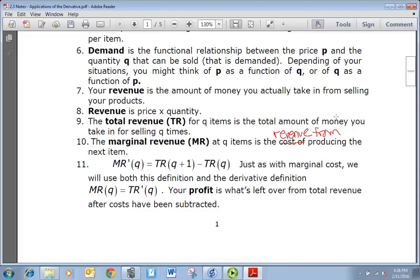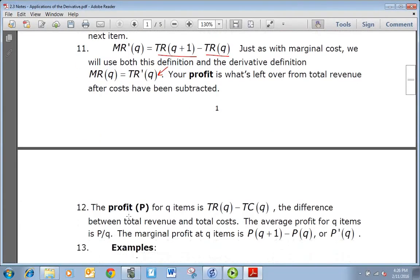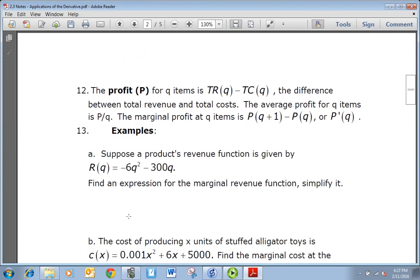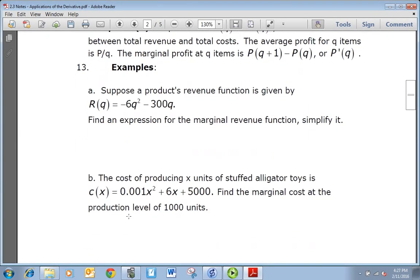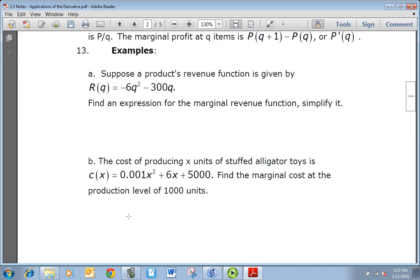So there's a linear way to represent marginal revenue or marginal cost. You can just take the cost of the next item and subtract it from however many items you have, the cost of however many items you have, and then you have costs for that next item. But typically it is easier to find it using the derivative. So just go through those vocabulary words as you need to, and we'll look at some examples.